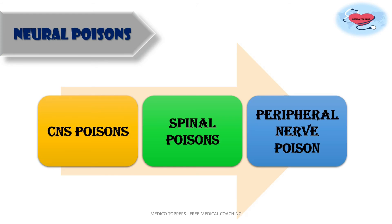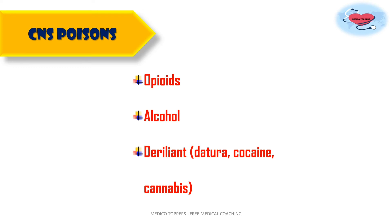Next come neural poisons. Neural poisons are classified into central nervous system poisons, spinal poisons, and peripheral nerve poisons. CNS poisons include opiates, alcohol and delirium-producing agents. Opiates are sleep-inducing or somniferous poisons. Stimulants or delirium-producing agents include datura, cocaine and cannabis. You can remember this as 'That Coke Can will cause delirium' — 'That' for datura, 'Coke' for cocaine, 'Can' for cannabis. Alcohol is an intoxicant or CNS depressant.